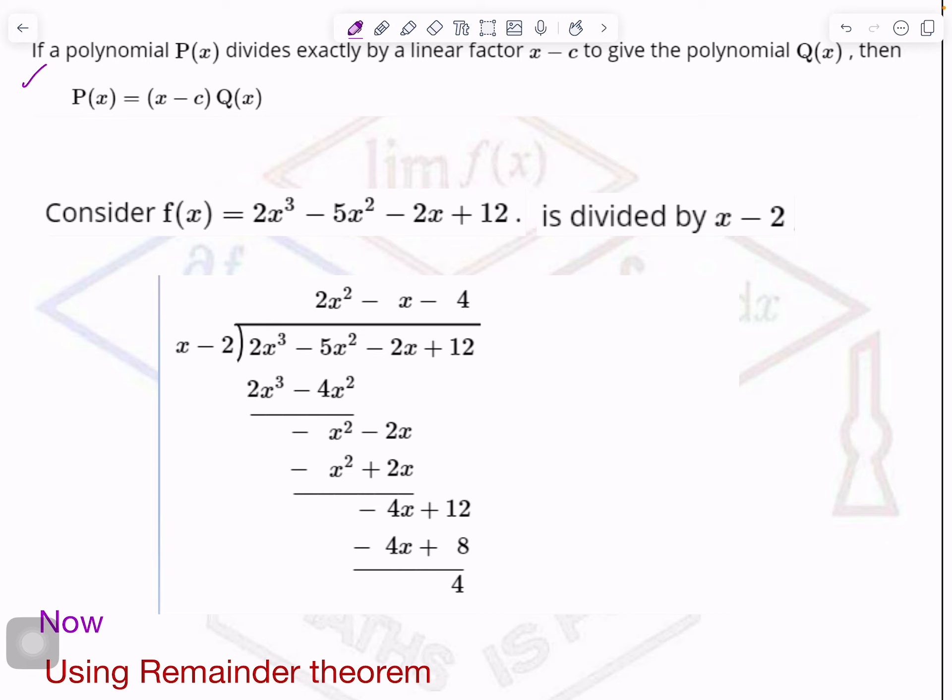Now this dividend is actually f(x), right? And you are dividing it by x minus 2. So let me call it x minus c, for example. And when you will divide, what you get here is called quotient. If at the end your remainder is 0, then these are your factors.